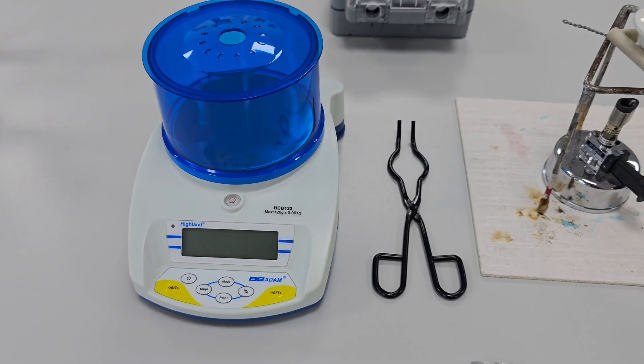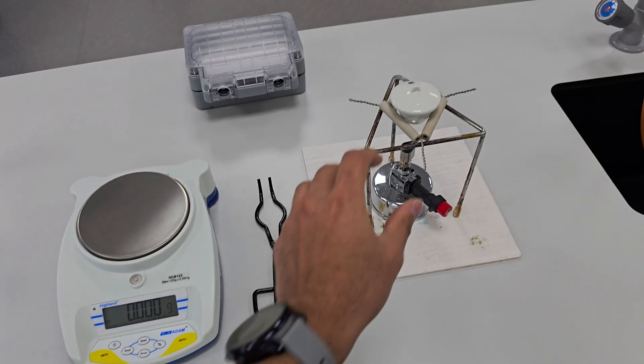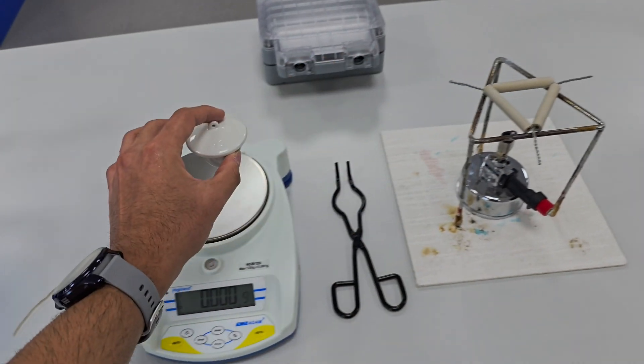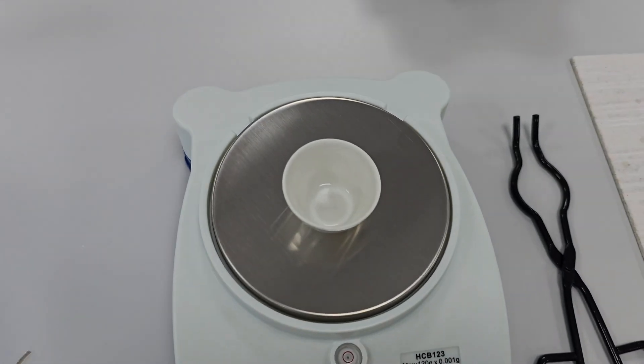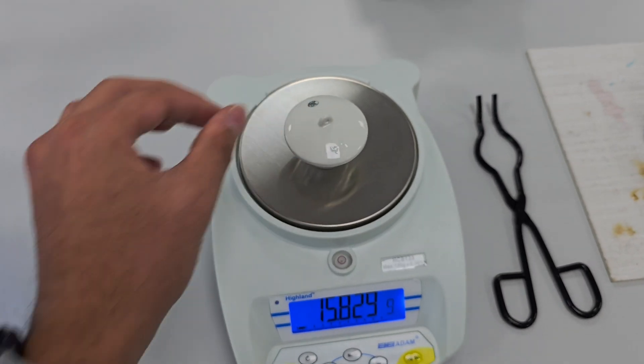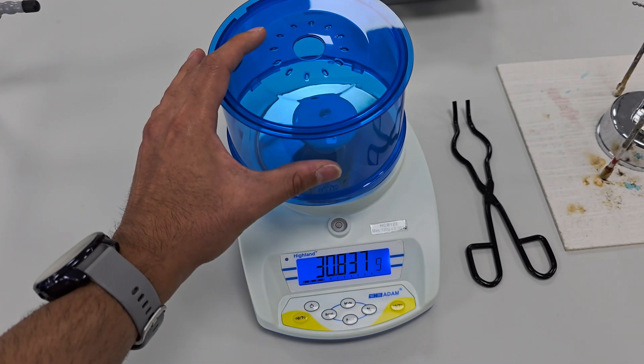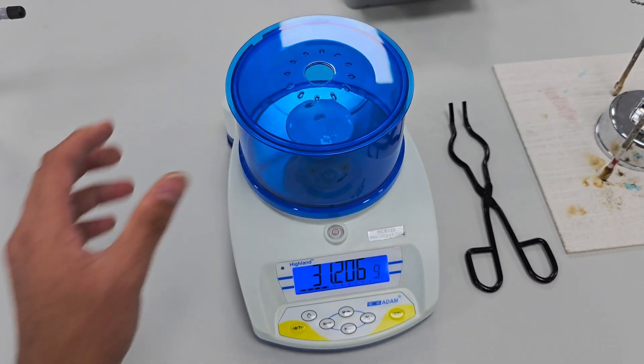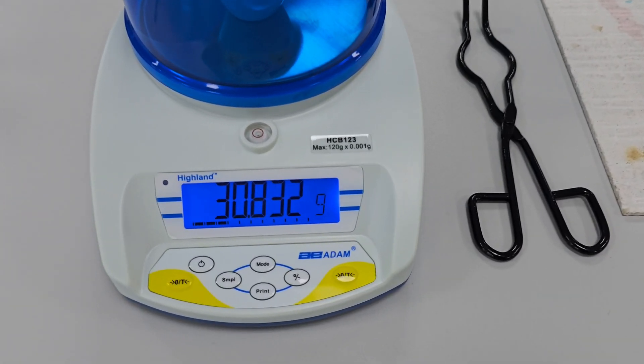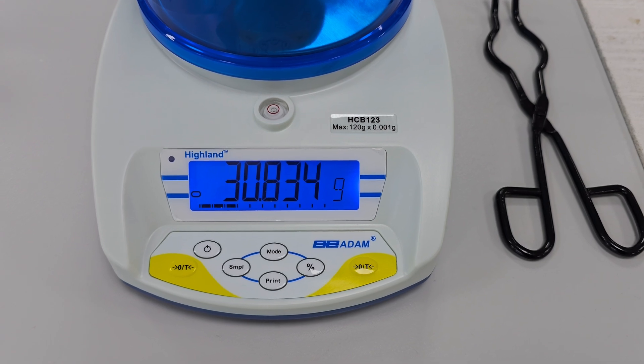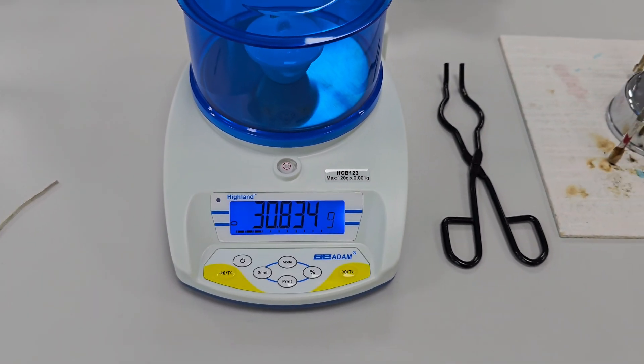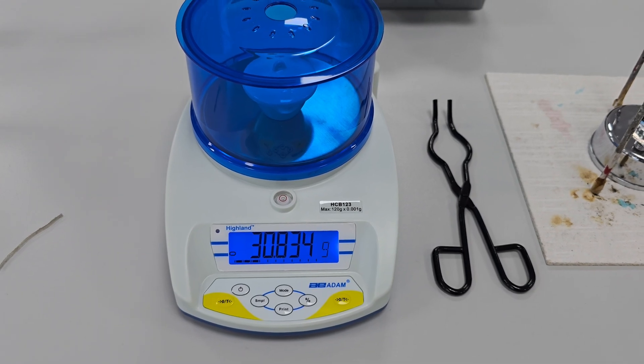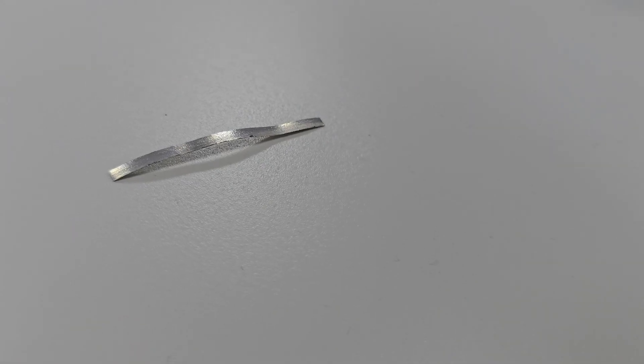Let's get started by measuring the mass of the empty crucible and lid. As you can see it weighs exactly 30.834 grams. This is important because we'll need to subtract this from the final mass to figure out how much magnesium oxide we have at the end and how much oxygen reacted with the magnesium.